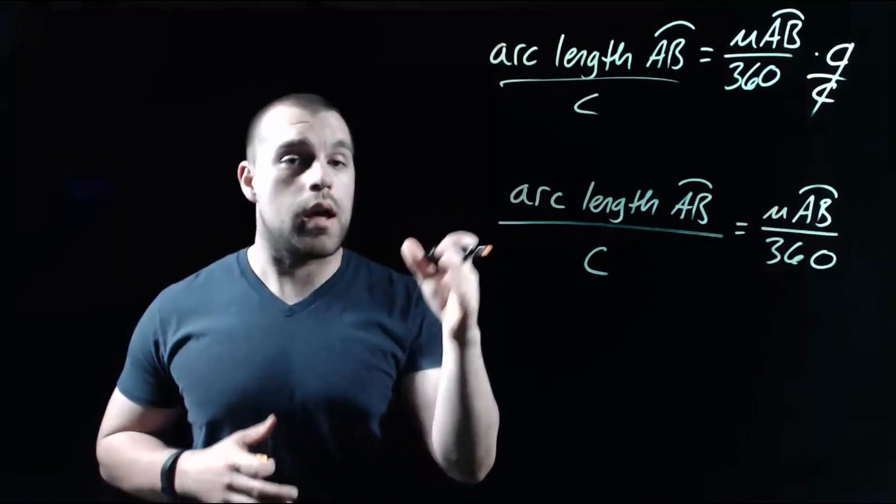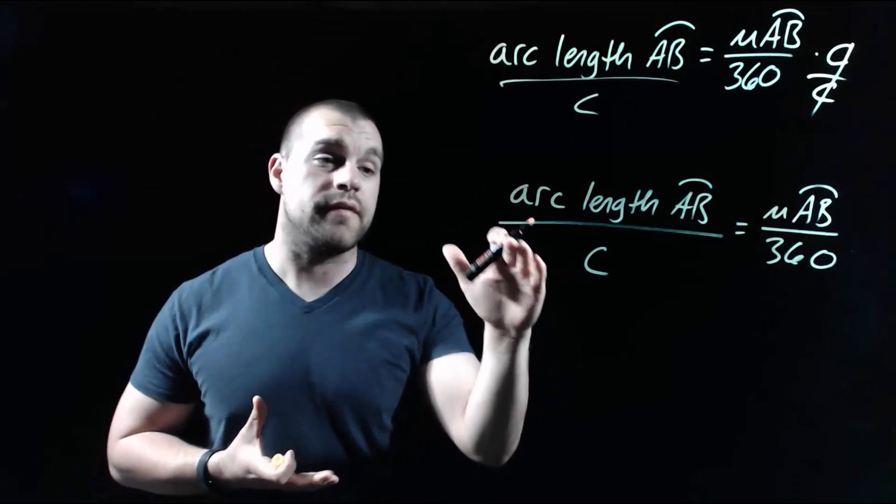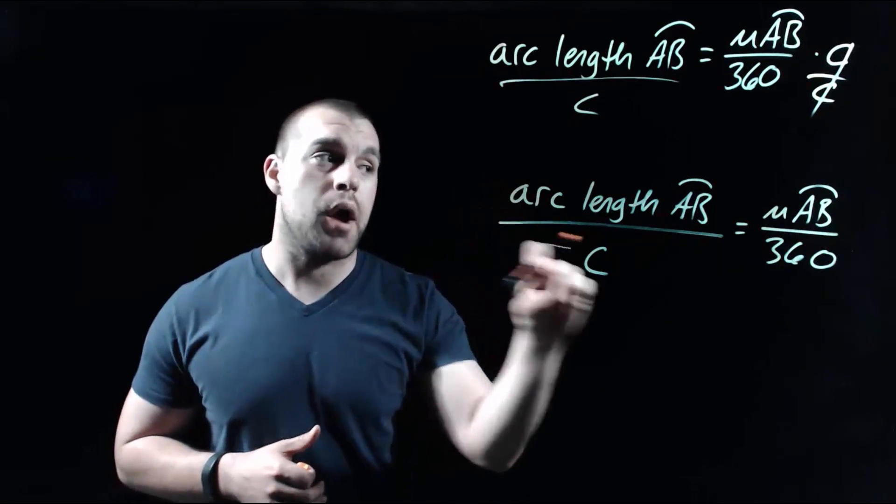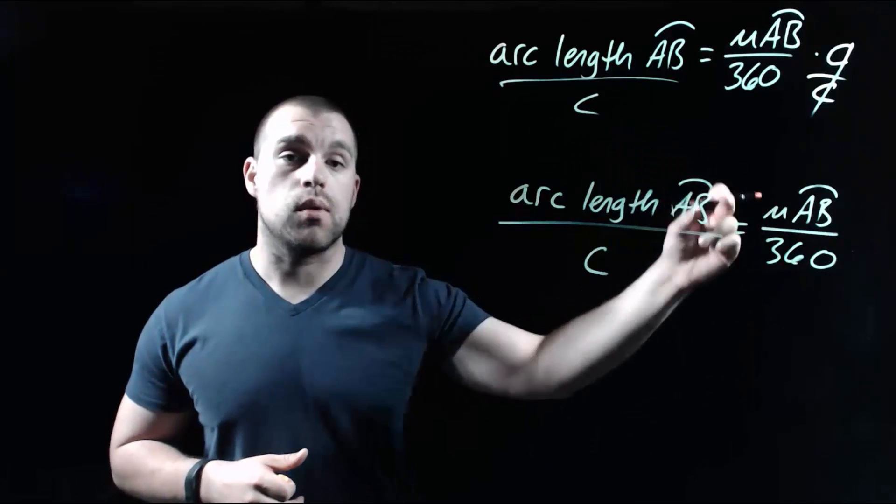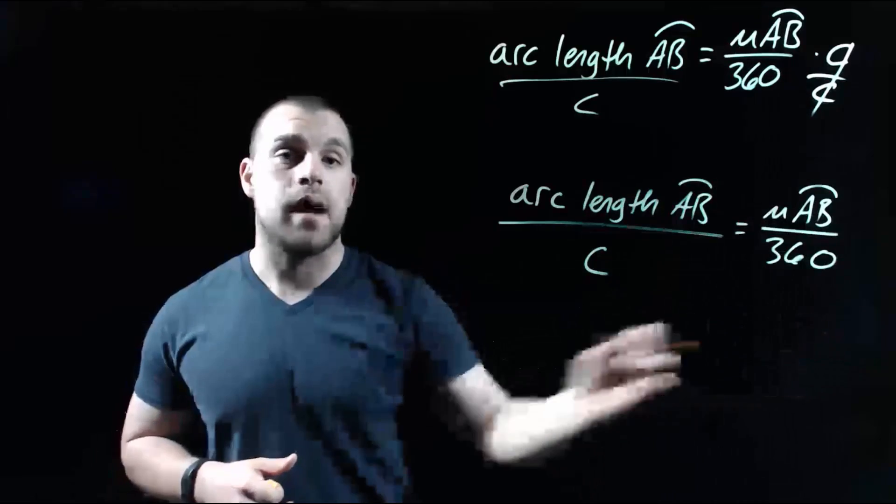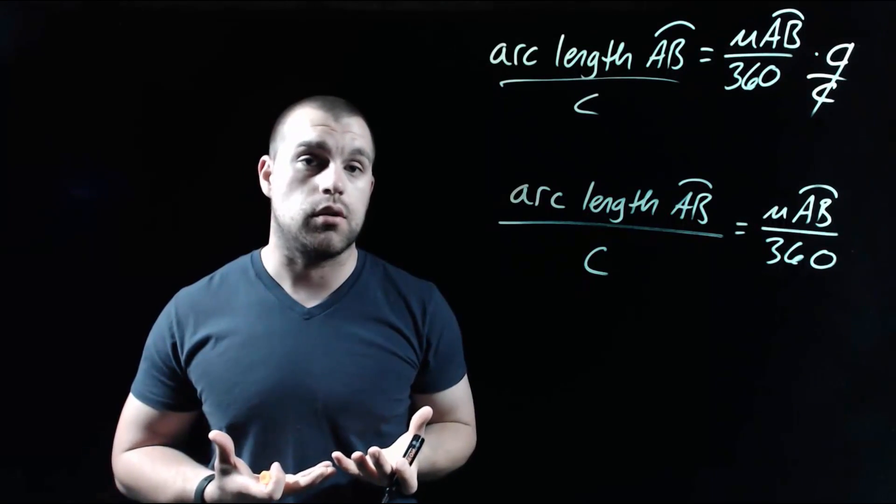So if we take the arc length of our AB arc divided by the circumference of our entire circle, that ratio or that fraction has to match up with the ratio of the measure of the arc in terms of degrees divided by our full 360 degree circle.